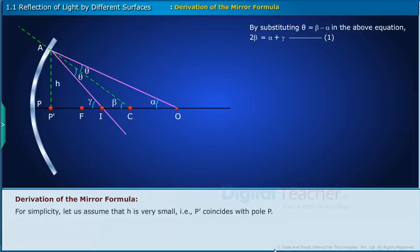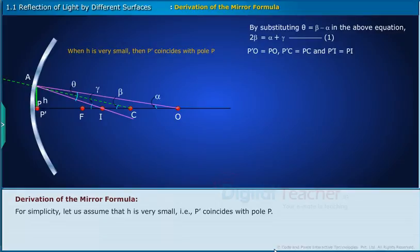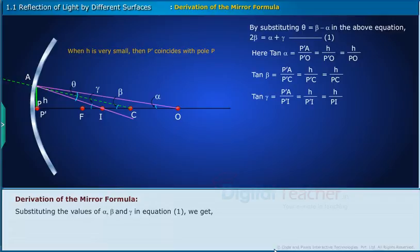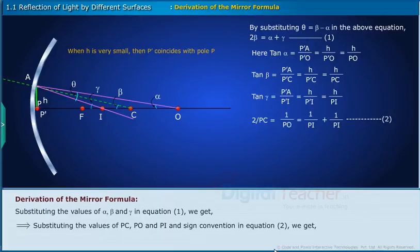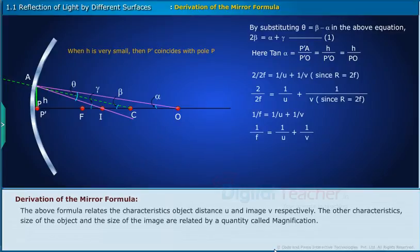For simplicity, let us assume that H is very small, so P' coincides with pole P. Then P'O equals PO, P'C equals PC, and P'I equals PI. The angles alpha, beta and gamma are small enough to be approximated as tan alpha, tan beta and tan gamma. Substituting the values of alpha, beta and gamma into Equation 1, we get Equation 2. Substituting the values of PC, PO and PI and applying the sign convention in Equation 2, we get the mirror formula. The mirror formula relates the object distance U and image distance V. The size of the object and size of the image are related by a quantity called magnification.